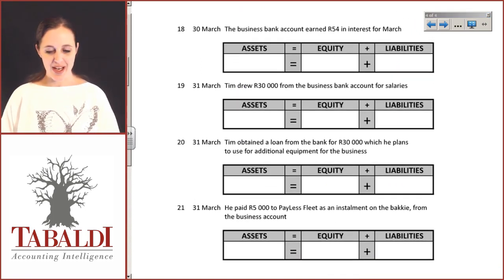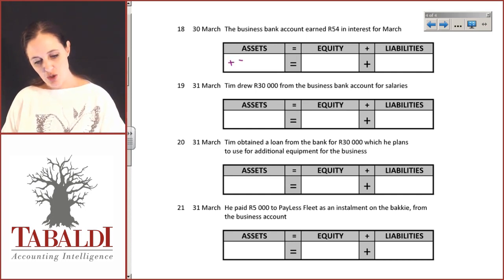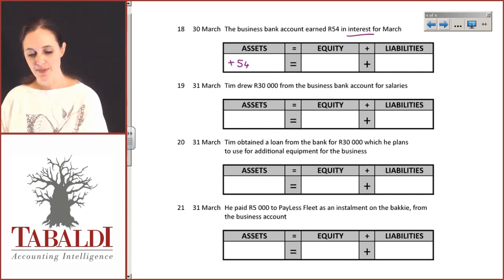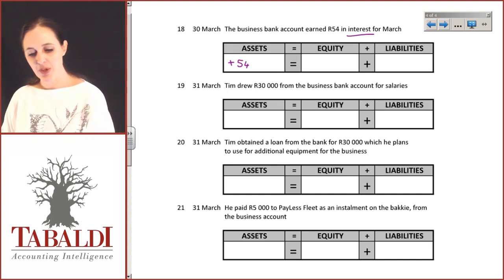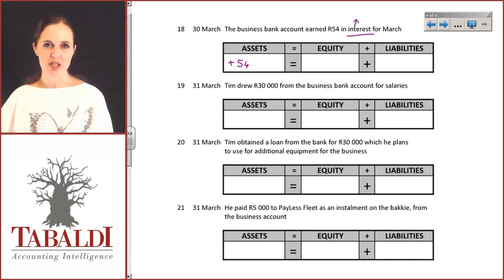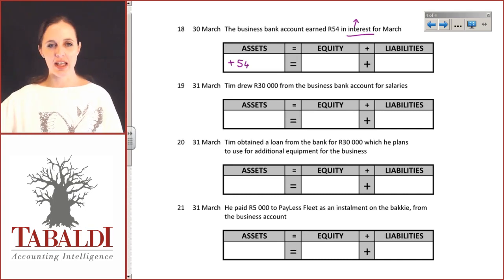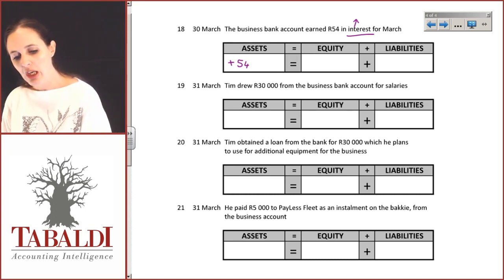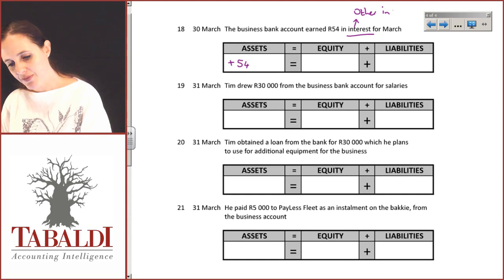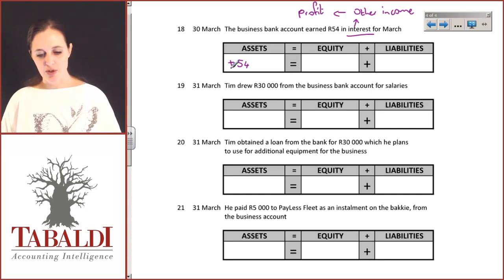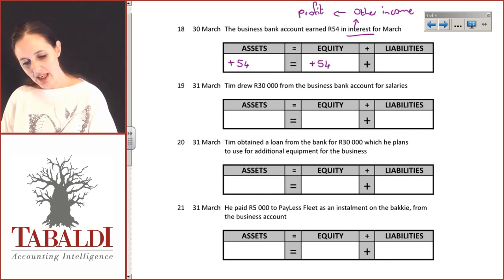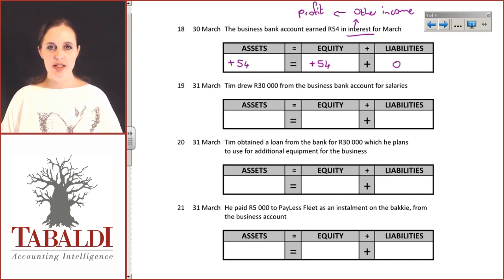The business account earned 54 Rand in interest for March, so the business account increases by 54 Rand. Interest is not revenue for him — go take a look at the infographic on the difference between revenue and other income. Tim's core business is not about earning interest; it's about rendering garden services and getting money for that. This will count as other income, but other income still forms part of profit. So it still increases his equity — his owner's share of the business — by 54 Rand. Liabilities: zero.